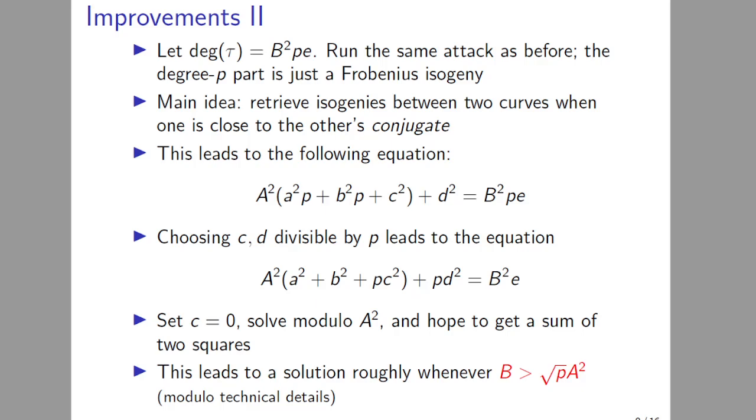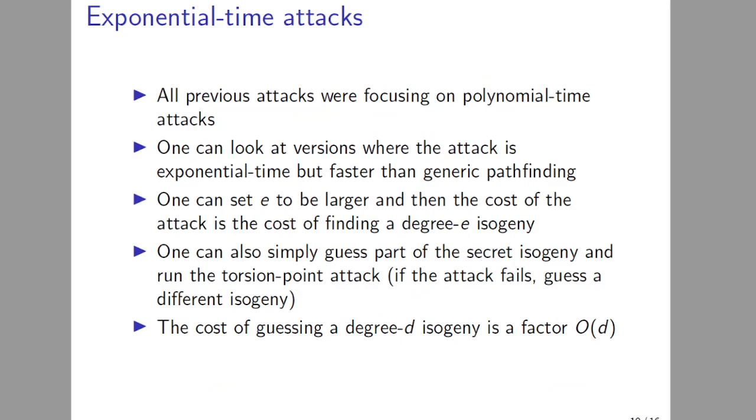You make this choice and then you divide by p and set c equal to zero. And then solving this equation is again very similar to before. You solve modulo A^2 and then hope that what you get is the sum of two squares. The importance of this method is that it's much less reliant on p, because essentially by setting c equal to zero you only have one p in the equation. This leads to a solution whenever B is bigger than √p·A^2, modulo some technical details which for that see the full version of the paper. So why is this important? Because you could bring down the exponent of p from one to one-half, but the exponent of A went up from one to two. But this is particularly important for SIDH-like parameter choices where p is the biggest factor in the equation.